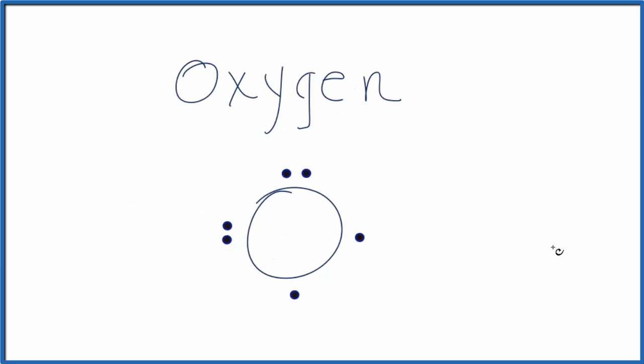So that's the Lewis structure for oxygen. Now let's do the oxide ion. Remember that for the oxide ion we have a two negative, two minus charge.